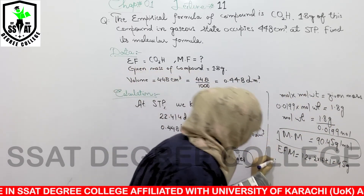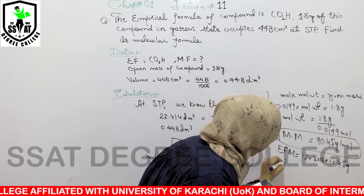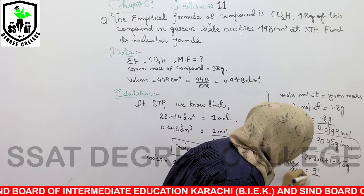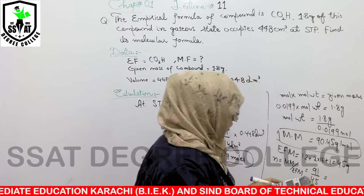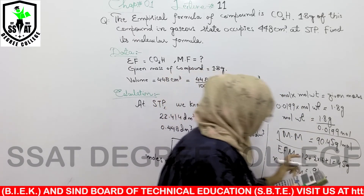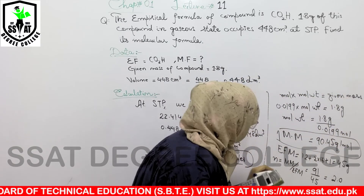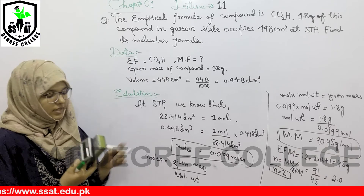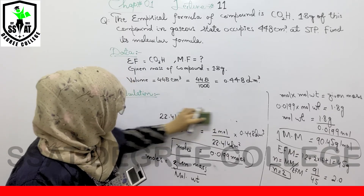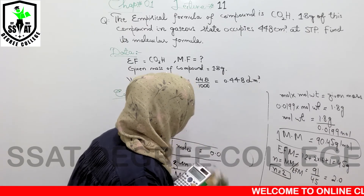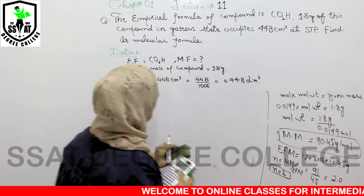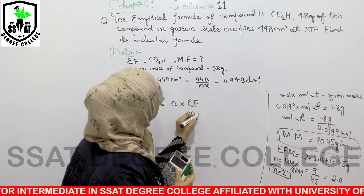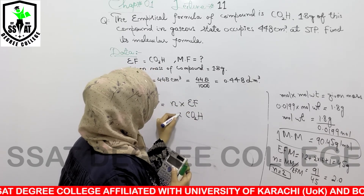Now we take the ratio of the two. n = molecular mass divided by empirical formula mass = 90.45 divided by 45, which is approximately 2.02. We round off to n = 2. Now we multiply this n by the empirical formula to get the molecular formula. The empirical formula is CO₂H, multiplied by 2.